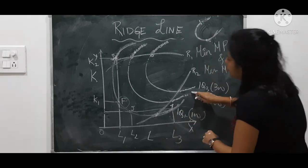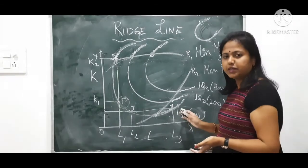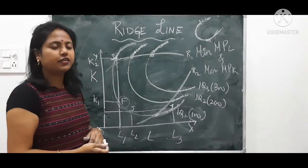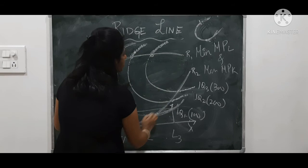So from here onwards, your productivity is negative or minimum. Here also, it is negative or minimum. So it is not efficient. So when we connect all these, this line becomes a ridge line.